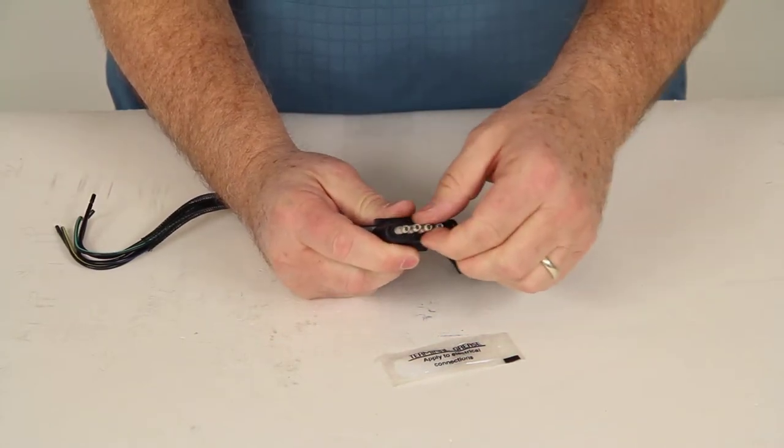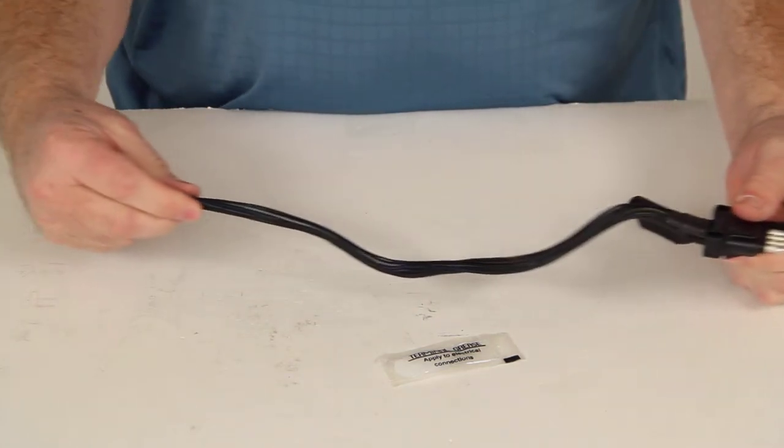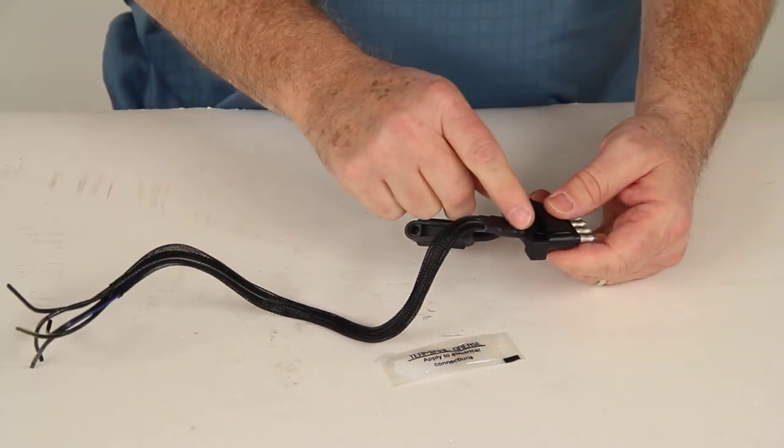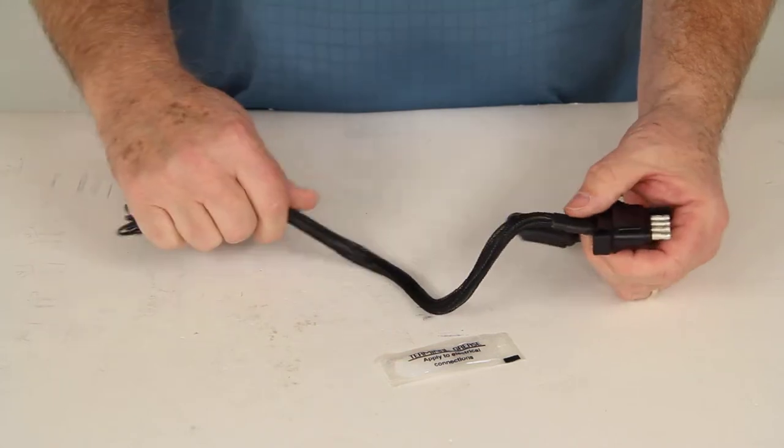These terminals are tin-plated to help resist corrosion. If you also notice, it has a long nylon sleeve right here. And then as the wires go into the connector, it uses a heat shrink tubing to help protect the wires from getting tugged on.